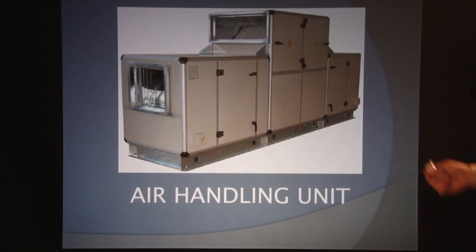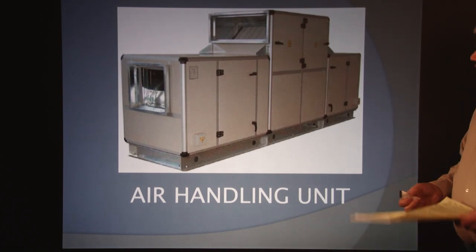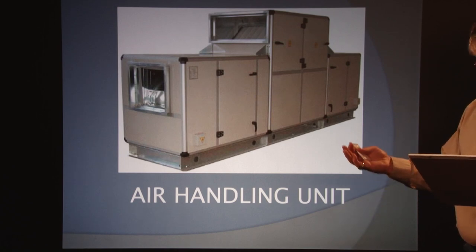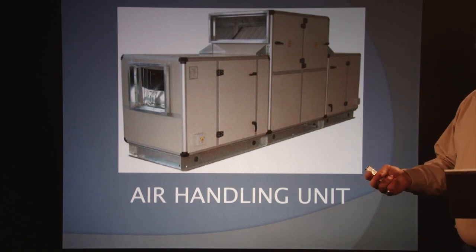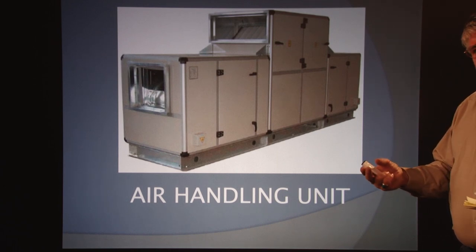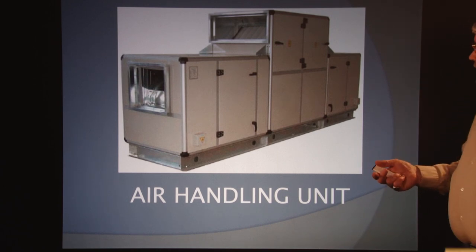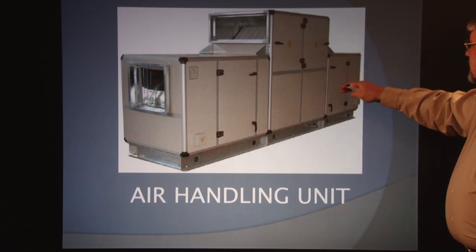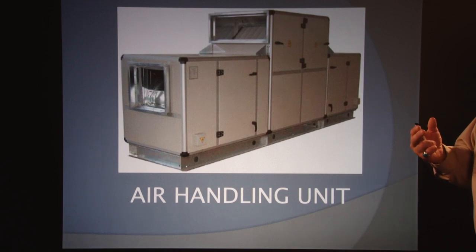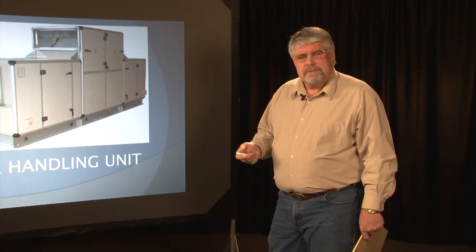Air handling unit. This is a unit mounted on the roof most of the time. The air handling unit is a blower or a fan used for the purpose of distributing supply air to a room, space, or area. It's got fans in there and filters. You'll know what this is if it comes up on your report from your third party person.